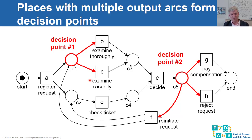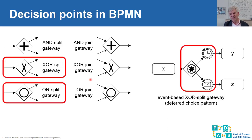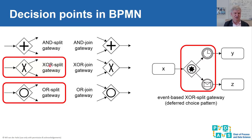In Petri nets, decision points are places with multiple outgoing arcs. In BPMN, these are gateways with multiple outgoing arcs - but not AND-gateways, because in an AND-split all exits are taken and there is no real choice. We focus on XOR and inclusive-OR gateways where multiple outputs are possible.